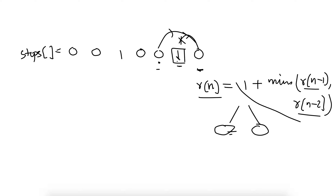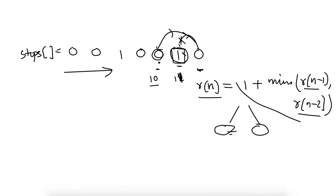We take the minimum of the two previous solutions. For example, if the minimum to reach position n-2 is 10 and the minimum to reach n-1 is 11, then jumping two steps from n-2 reaches n in 11 steps, while jumping one step from n-1 also takes 12 steps. So we pick the minimum of the last two values and add one.